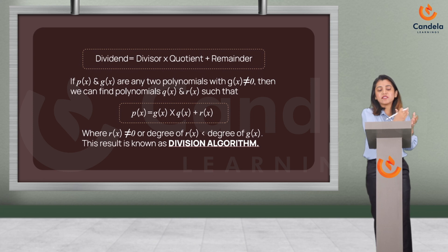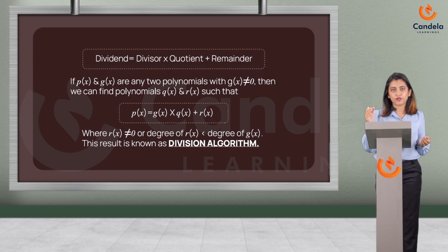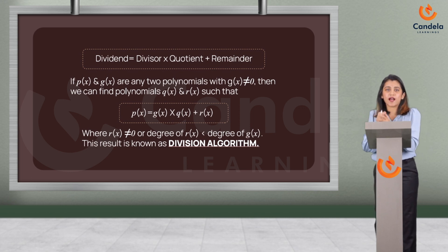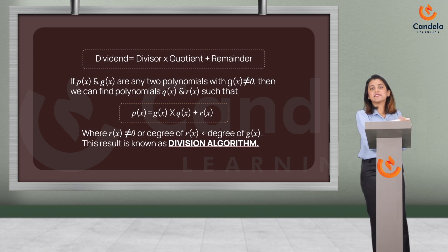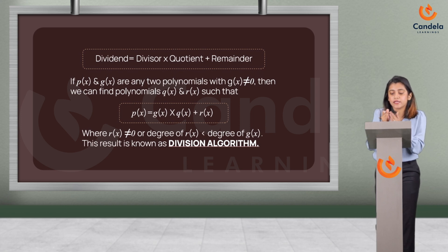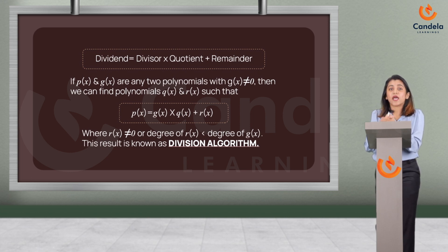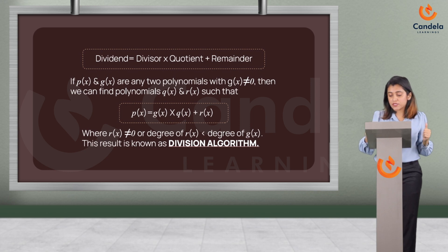Every time: dividend = divisor × quotient + remainder. If p(x) and g(x) are any two polynomials with g(x) ≠ 0, then we can find polynomials q(x) and r(x) such that p(x) = g(x) × q(x) + r(x), where r(x) = 0 or degree of r(x) is less than degree of g(x). This result is known as the division algorithm.